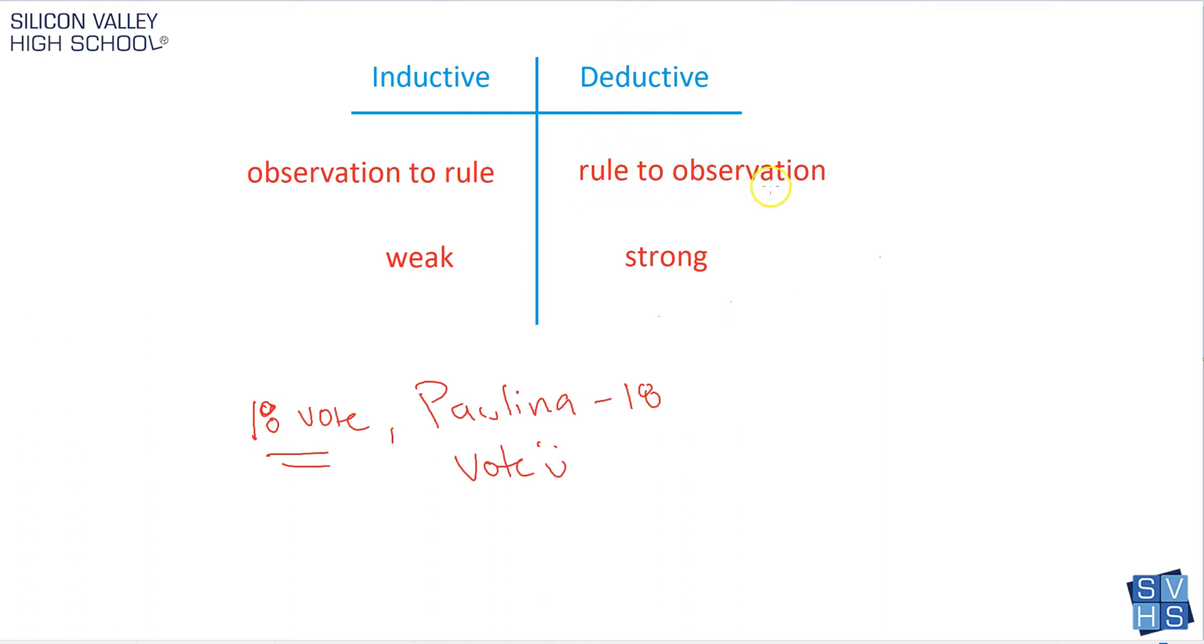We went from a rule to an observation. And this is also a good example of why deductive reasoning, although it appears to be bulletproof, it could be wrong. Because, again, we forgot the little disclaimer, maybe Paulina has a felony, right? Maybe Paulina is a criminal, and now she cannot vote. So this could all be based on faulty logic. However, it is deductive reasoning, because we went from a rule, 18-year-olds can vote, to an observation. So that was deductive reasoning.